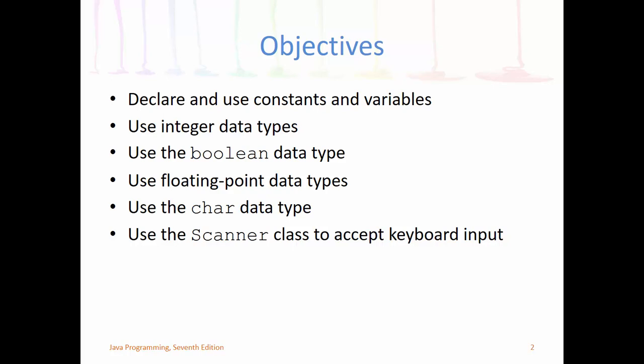Here are the objectives for this chapter. We're going to look at the different data types and variable types present in the Java programming language. There are some similar things to other languages, like integers, and then there are unique quirks that are different. You might not latch on to those right away until you start learning more advanced concepts, but I'm going to try to make it clear.